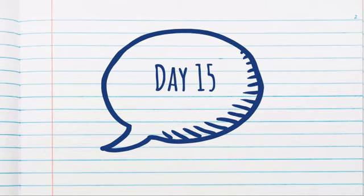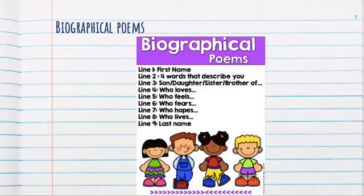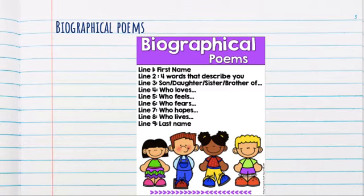Yesterday we started working with biographical poems. A biographical poem has nine lines. Line one has your first name, line two has four words that describe you, line three says son, daughter, sister, or brother of, line four tells about things you love, line five tells about what you feel, line six tells about what you fear, line seven tells about what you hope for, line eight says where you live, and line nine has your last name.